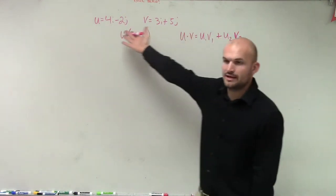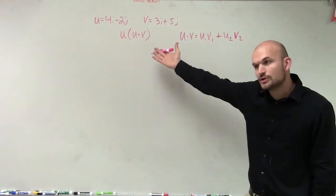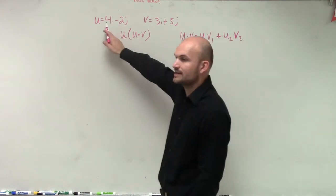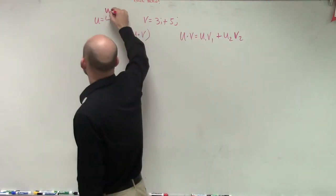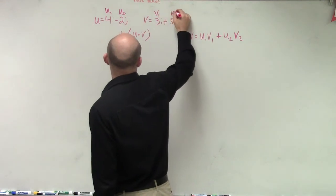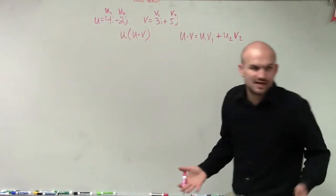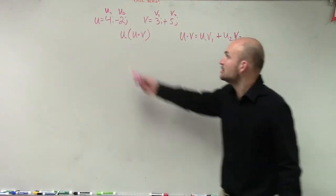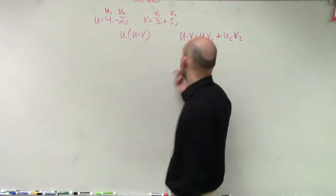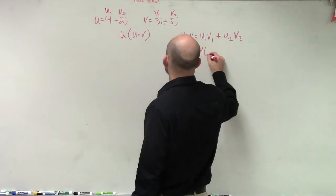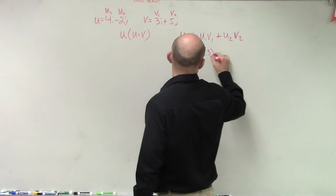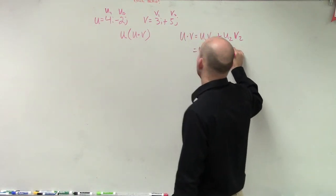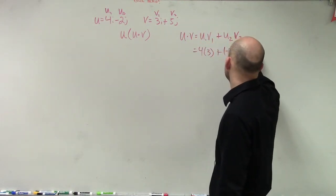So we look at our two vectors. And yes, we could put them in component form, or we could just say that we already know that this is u1, that's u2, this is v1, and that's v2. But remember, the i and j's are just part of your linear combination. So u1 is just 4, right? So I have 4 times 3 plus negative 2 times 5.